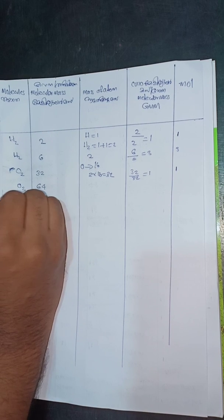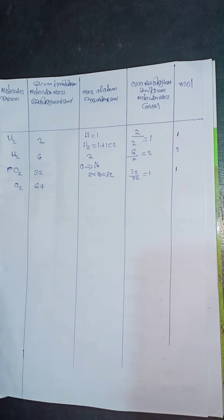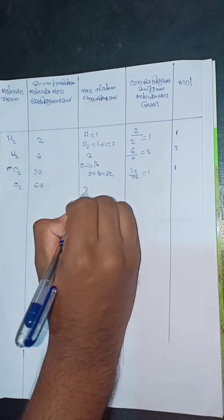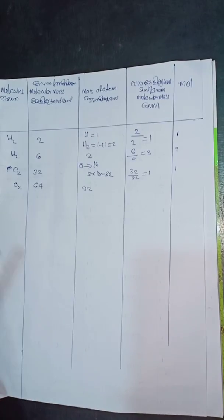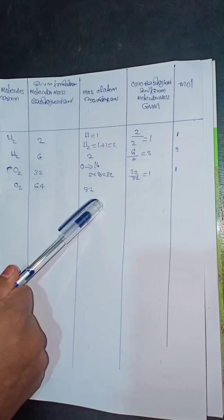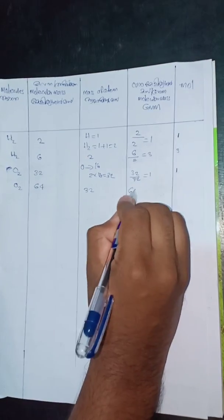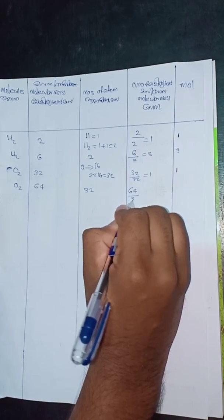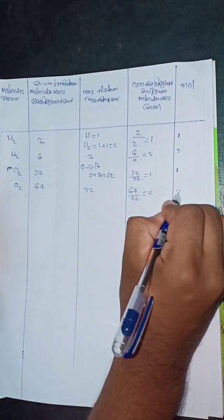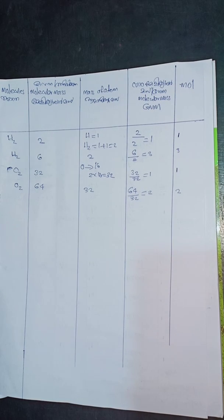Oxygen molecular mass is 32. Given mass is 64. So the number of moles = 64 divided by 32 = 2. How much GM is equal to 2.